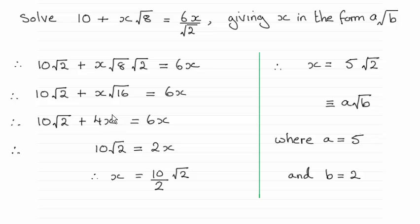Subtracting 4x on both sides gives us 10√2 = 2x. Divide both sides by 2, and you can see that it simplifies to x = 5√2. And there we go.